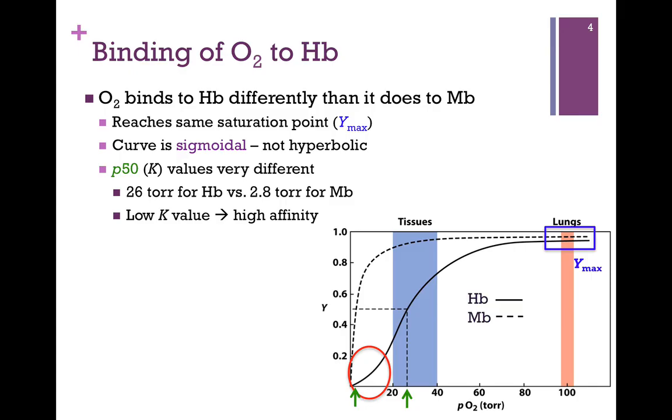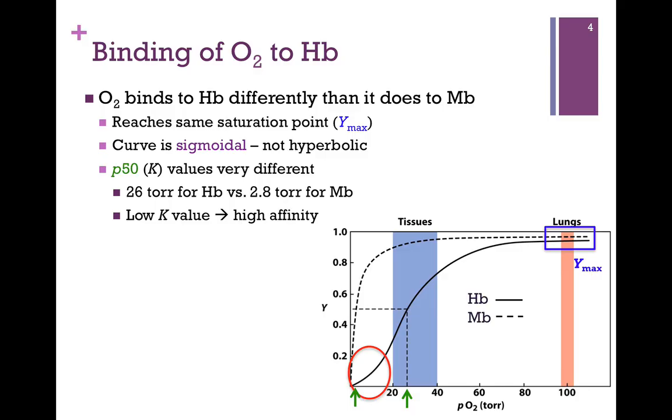And so we have to ask ourselves, since they have such different binding affinity patterns, what's the difference between them? Well, they differ in primary structure, but in secondary and tertiary structure, they're identical. So what's the only real difference? Well, the difference must be that myoglobin is a single chain, whereas hemoglobin is a tetramer. And indeed, that is the fact.